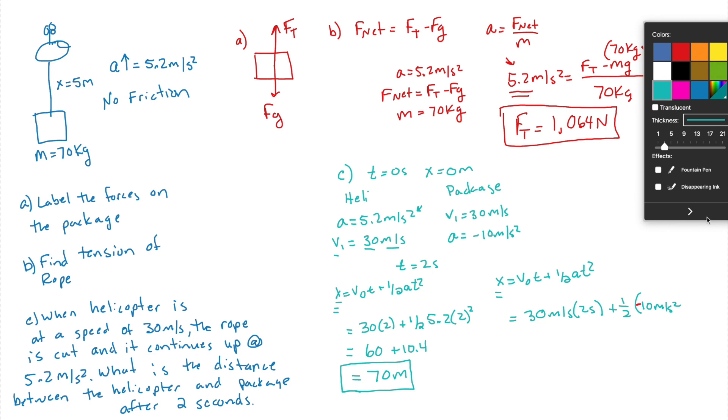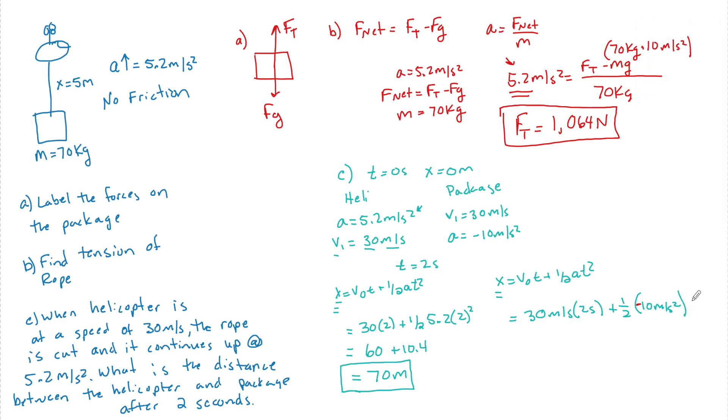Then we have 2 seconds squared, and we find out that we have 60 meters minus 20 meters. So that means that its position is at 40 meters.